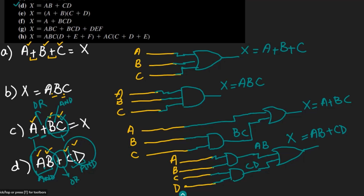So in this video we have covered all parts from A to D, and we have seen how to implement Boolean expressions using digital circuitry. All circuits are composed of AND gates, OR gates, or a combination of the two. I will see you with the remaining parts in our upcoming video — till then, take care.